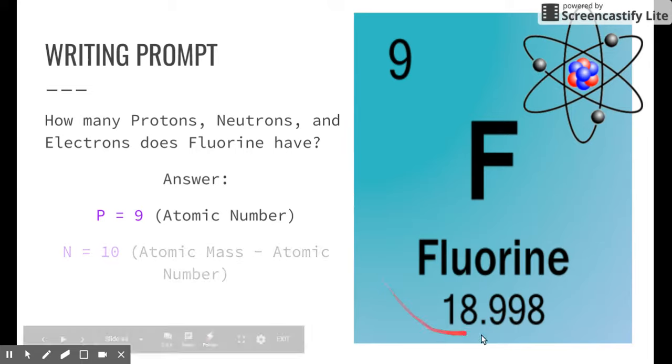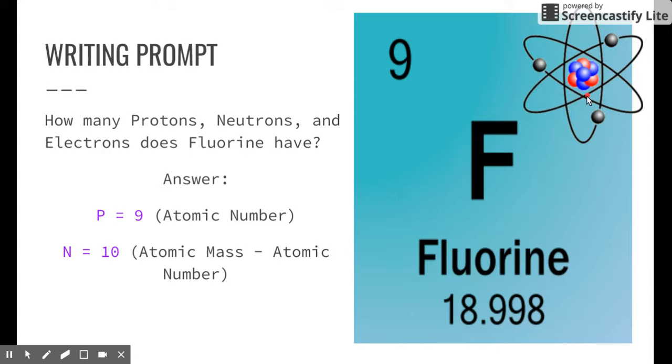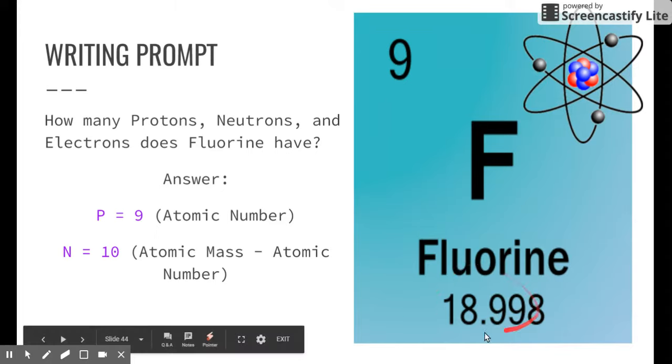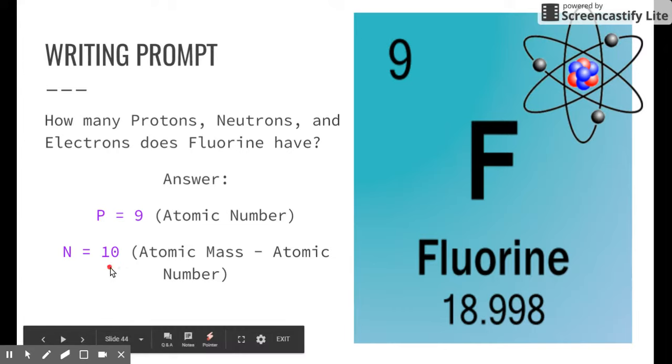How about the number of neutrons? This number down here will be helpful for us. This number, and we're going to round it to 19, represents the mass of an atom. If we look at an atom like this one, the nucleus or the center of the atom represents all of the atom's mass. In that nucleus is protons and neutrons, so that's where the mass comes from. We just learned that the mass equals 19, and we know that 9 of that 19 is protons, so the leftovers must be neutrons, i.e. 10. There are 10 neutrons in fluorine.